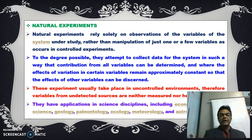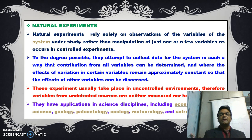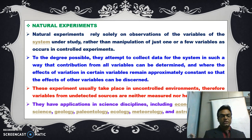Next is the natural experiment. It relies on observations of the variables of the system under study, rather than the manipulation of one or a few variables as occurs in controlled experiments. They attempt to collect data in such a way that the contribution from all variables can be determined, and where the effects of certain variables remain approximately constant so that the effects of other variables can be discerned. These experiments usually take place in an uncontrolled environment; therefore, variables from undetected sources are neither measured nor held constant. Natural experiments have applications in economics, political science, geology, paleontology, ecology, meteorology, and astronomy.